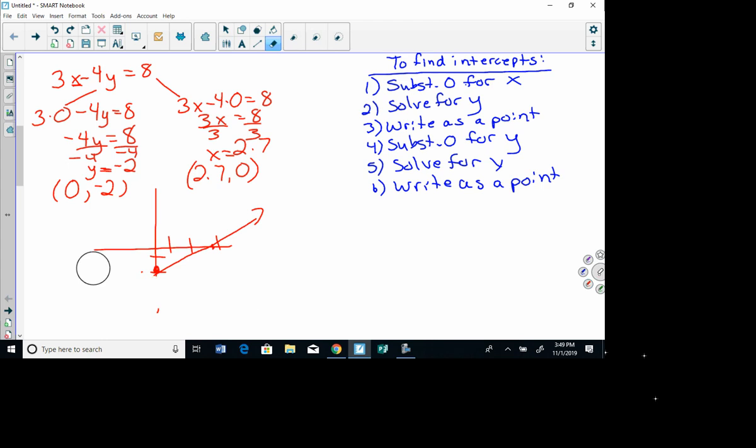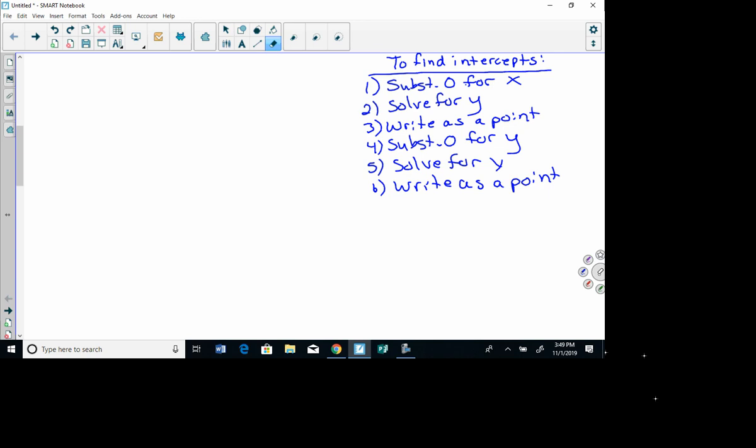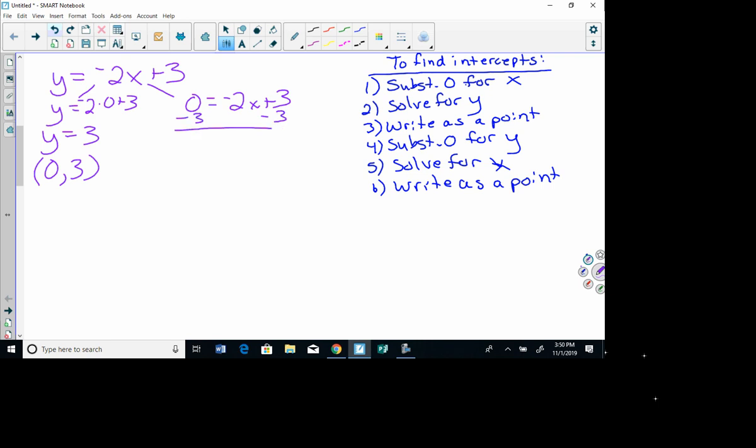I'm going to do one more with you. It's y equals negative 2x plus 3. I put 0 in for x. Negative 2 times 0 is 0. So 0 plus 3 is 3. So I solve that for y. And then I write as a point. I put 0 in for x, y is 3. Now I'm doing number 4. I substitute 0 for y. Y equals negative 2x plus 3. I have to solve for x. I have to subtract 3 from each side. Negative 3 equals negative 2x. Divide by negative 2. Negative 3 divided by negative 2 is 1.5. So my point is 1.5, 0.